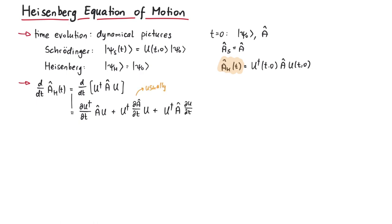Usually the partial time derivative of a is zero, since operators are not often explicitly time dependent, but in order to be as general as possible, we keep this term.